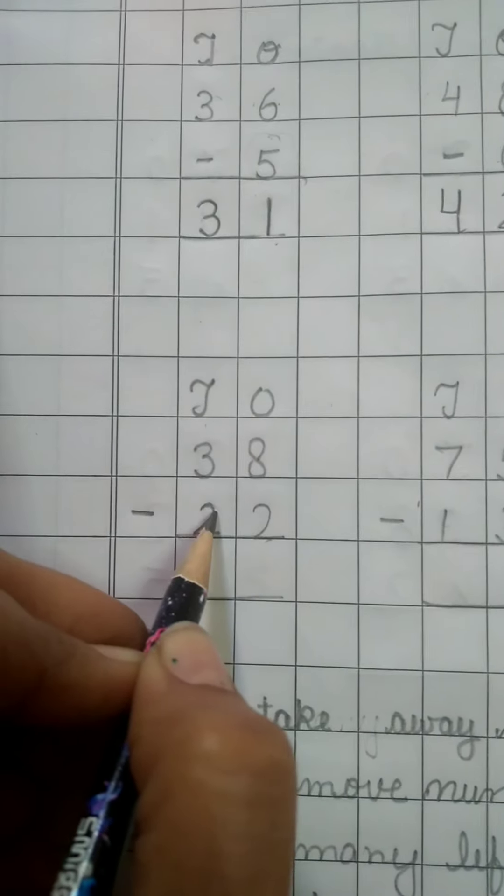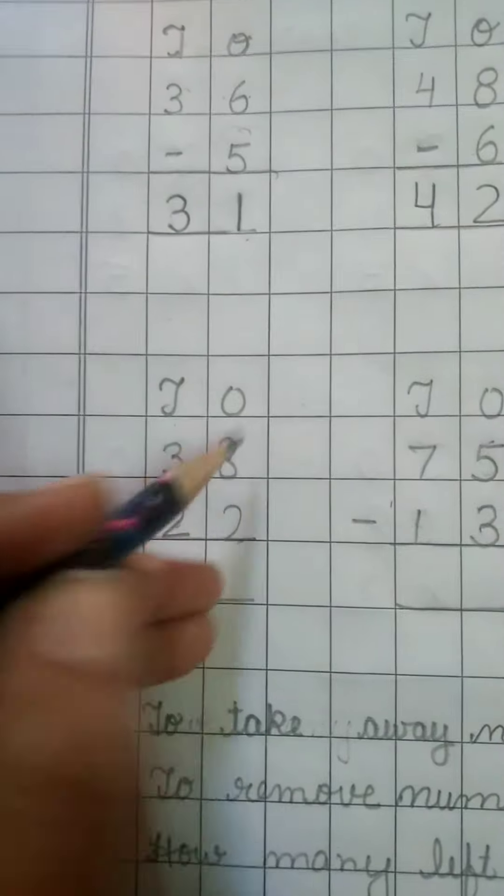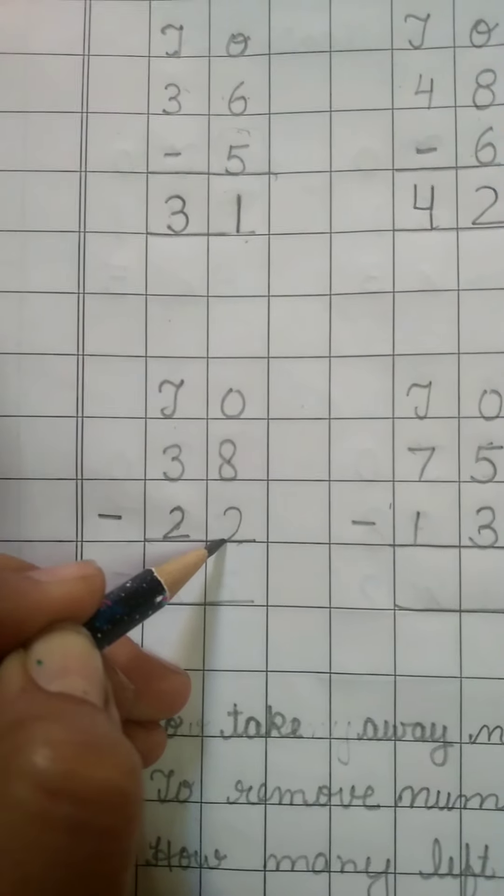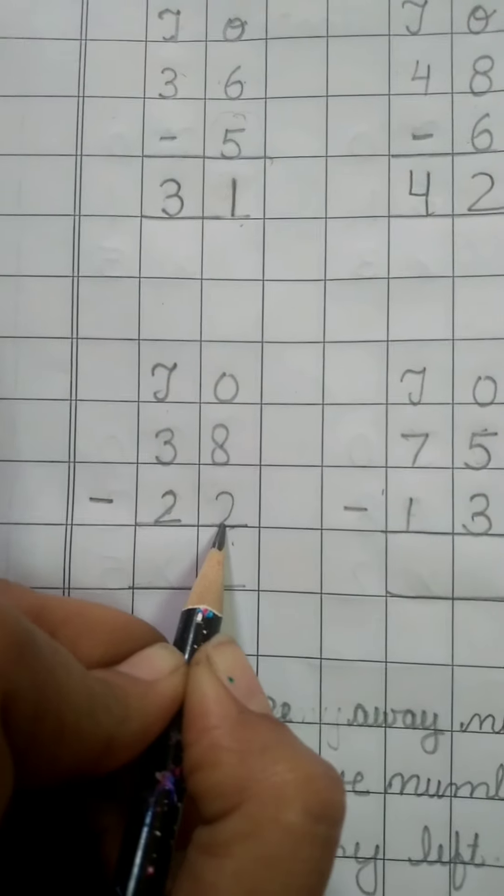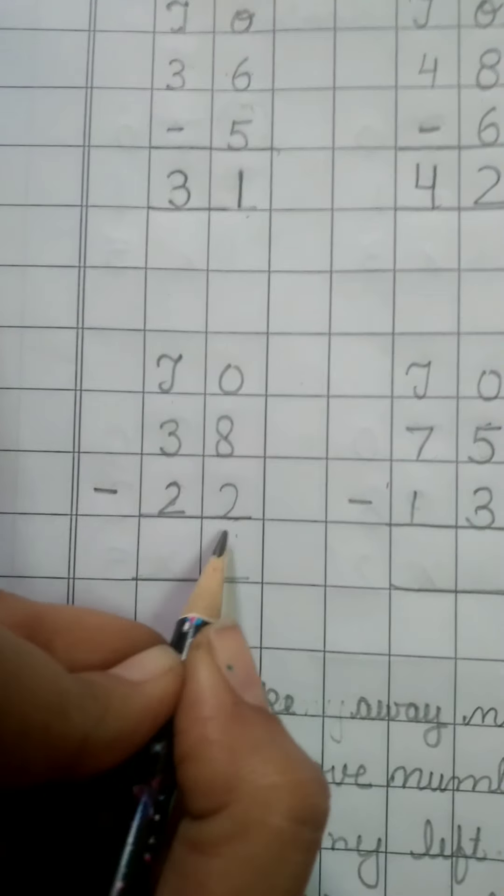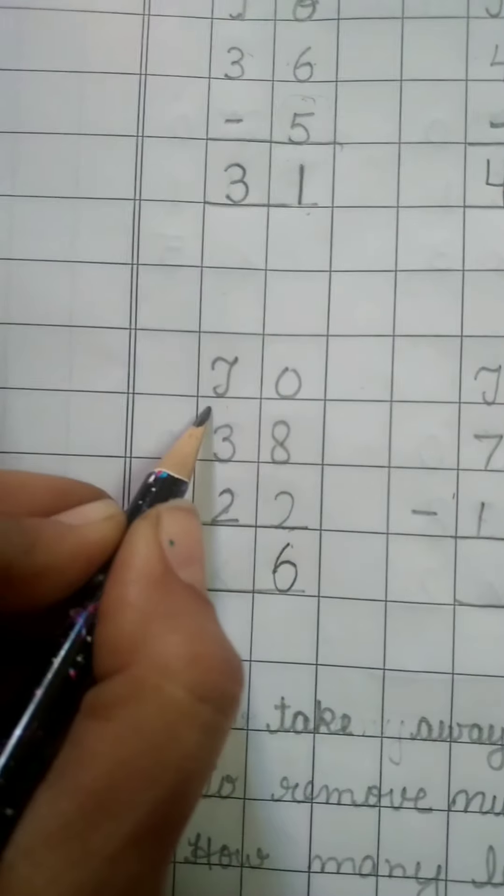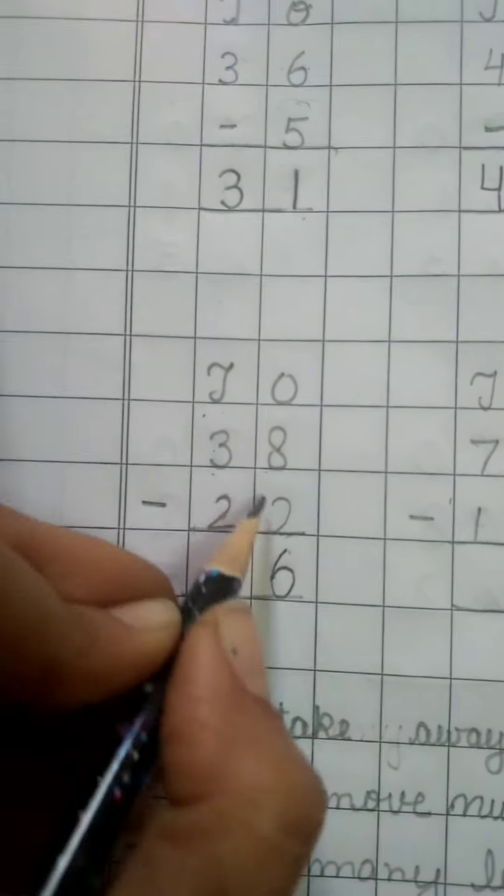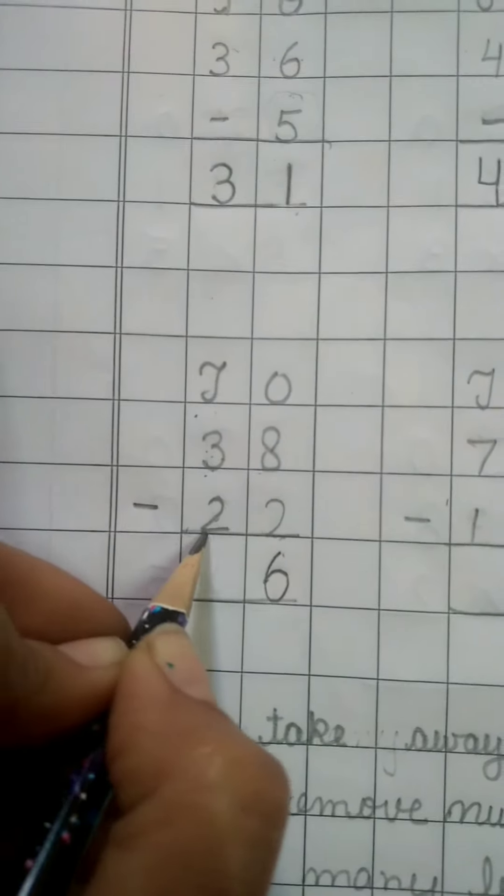In the tens place, we have all numbers. What we are going to do? Eight minus two. Eight minus two - what will we get? Six. Six again in the tens place. In the same way, exact same way.